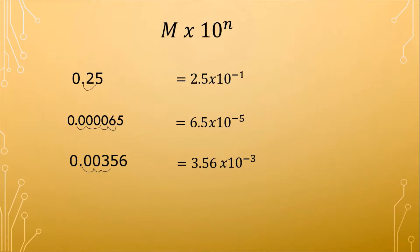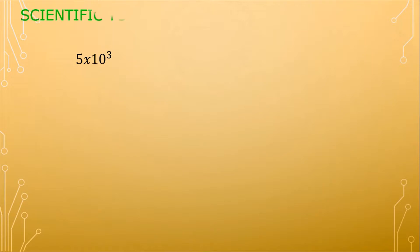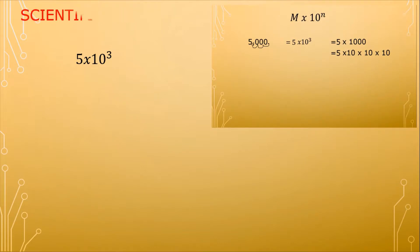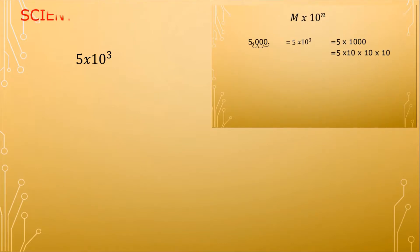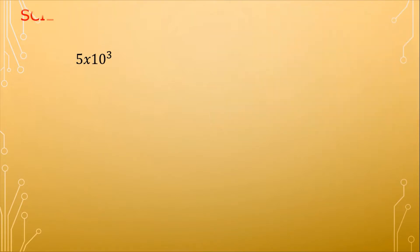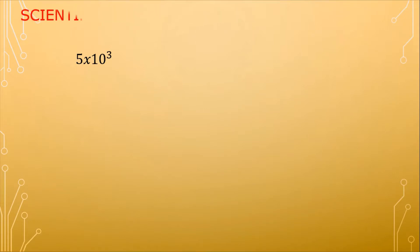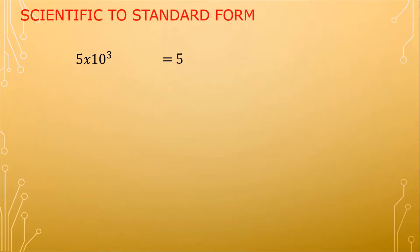But what if we are going to write a number in scientific notation back into standard form? For example, we have 5 times 10 raised to the third power. To do that, we will reverse what we did earlier. Because we moved it to the left before, now we are going to move it to the right.